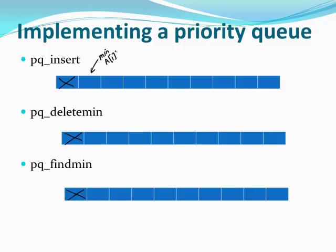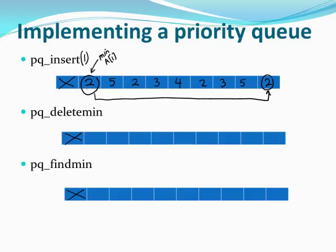Let's consider the complexity of operations. If you insert an element that is strictly less than the current minimum, you place it at a[1] and move the old minimum to the back — just a swap of two elements, no shifting required. This can be done in O(1).